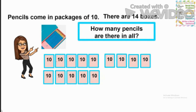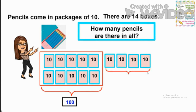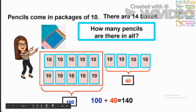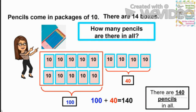Now I have drawn pencils in packages of 10 and 14 boxes. Here I know that 10 tens makes 100. That leaves me with four extra boxes. I can count by 10: 10, 20, 30, 40. Now I have 40 extra pencils, and together 100 plus 40 equals 140. So there are 140 pencils in all.